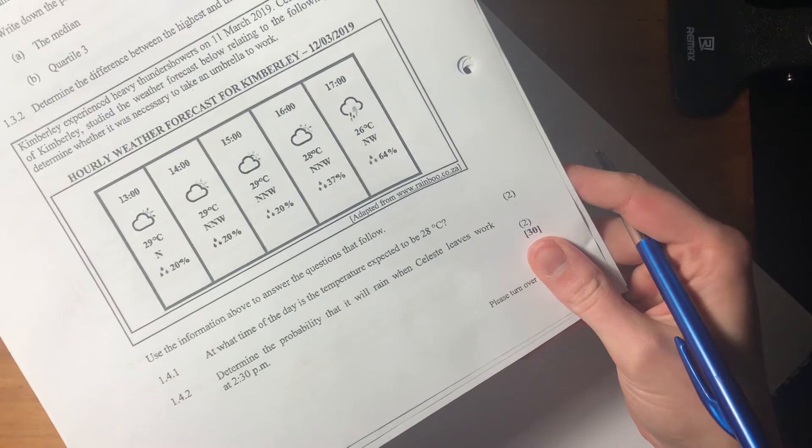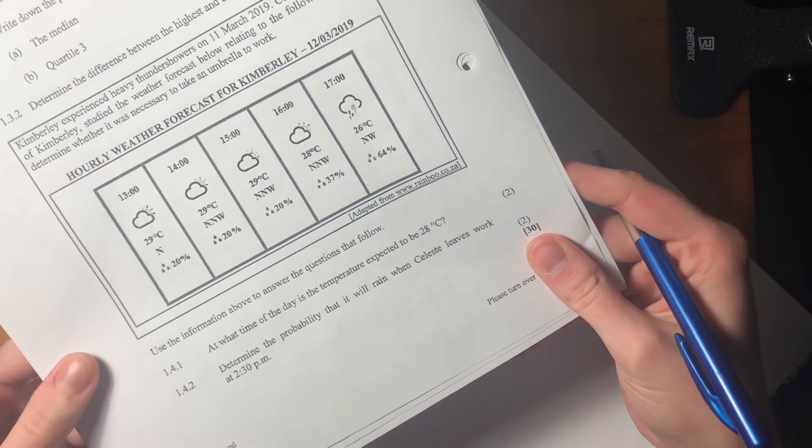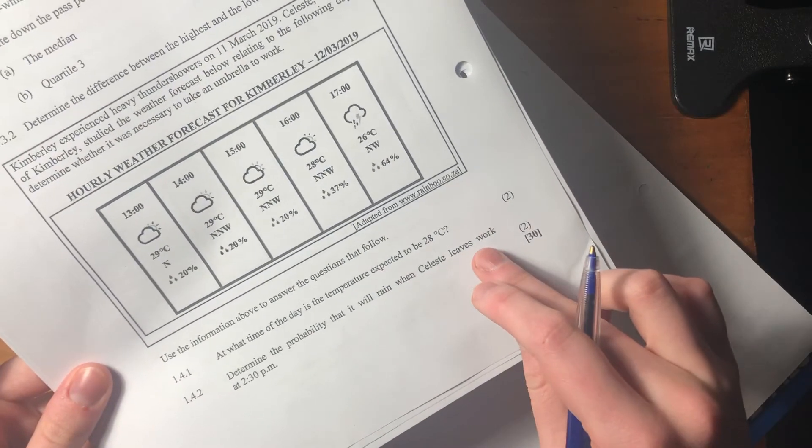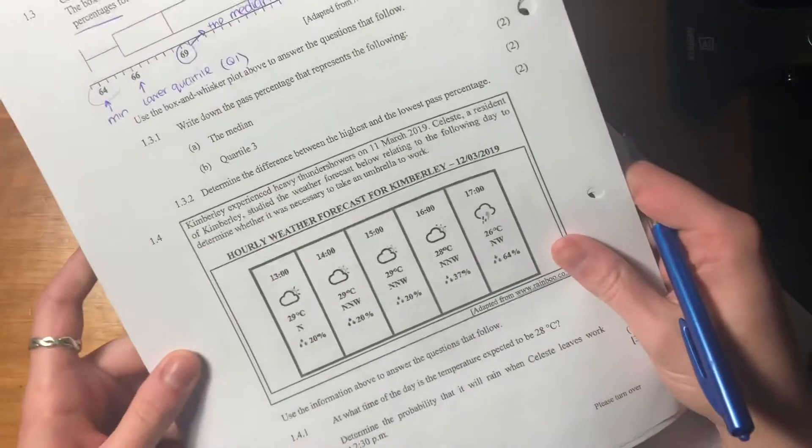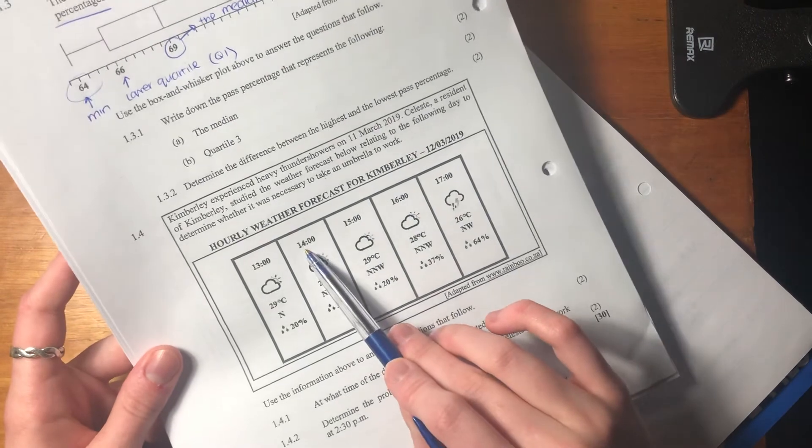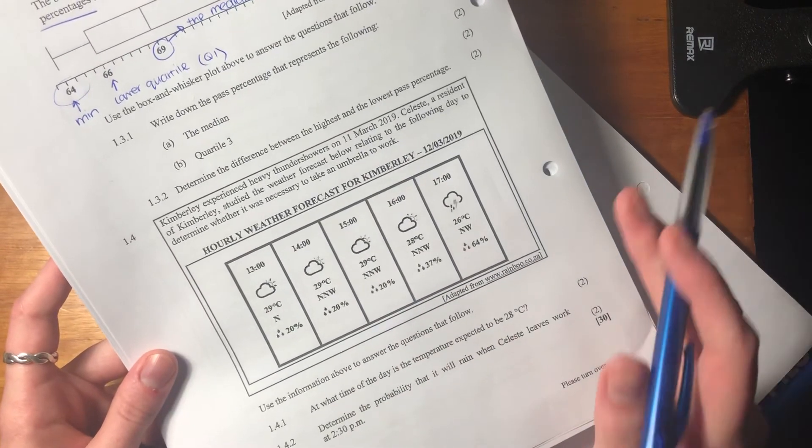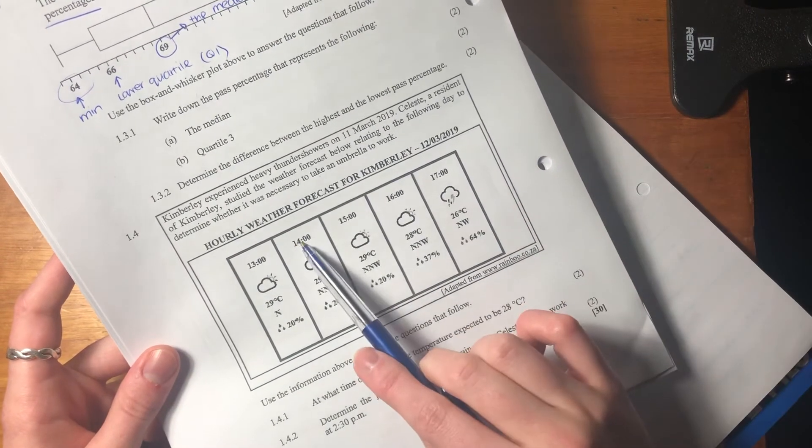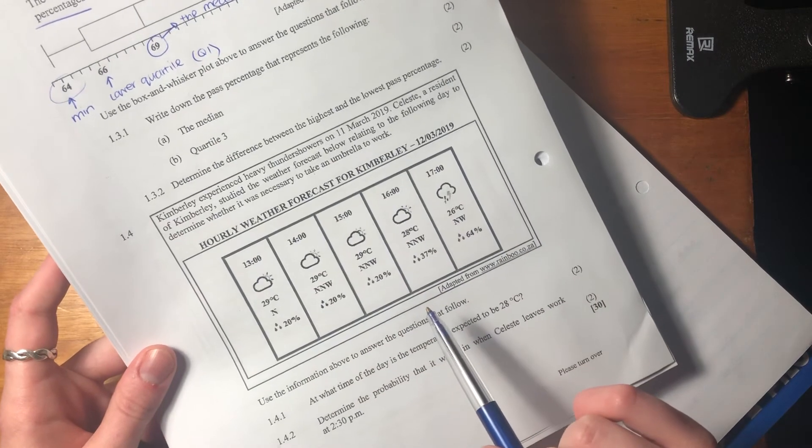1.4.2 says, determine the probability that it will rain when Celeste leaves work at 2:30. Now they're trying to trick us here, because they don't give us 2:30, do they? They give us two, and they give us three. But we know that 2:30 is between two and three, right? It's right in the middle.